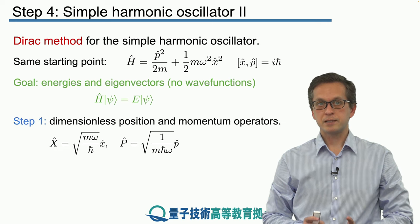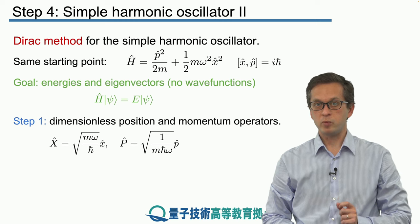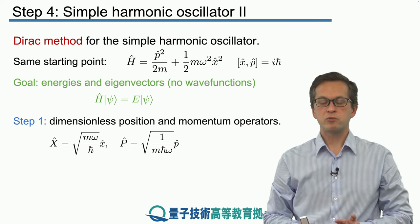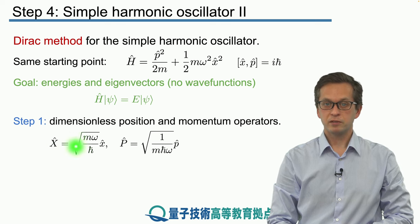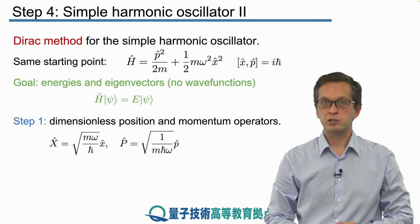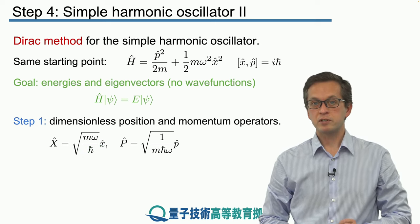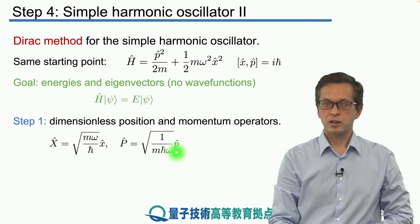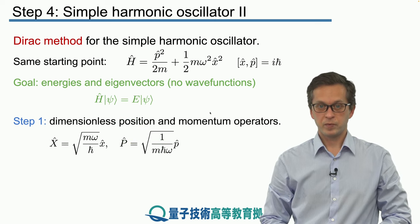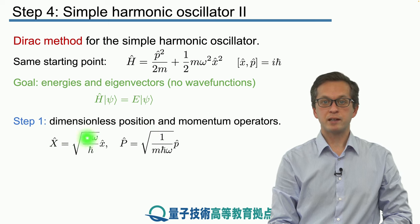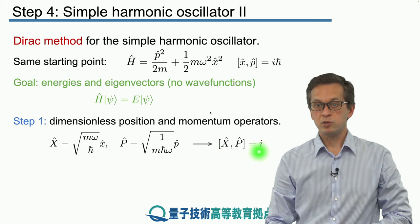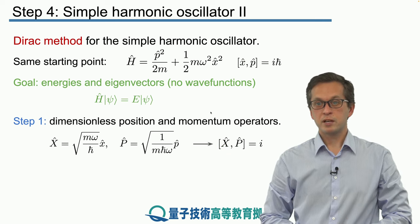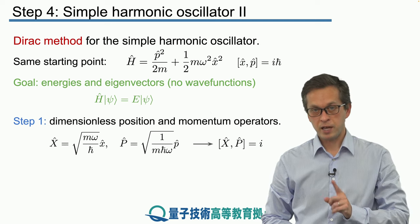So how do we go about solving that? Step number one is to introduce dimensionless position and momentum operators. This is just rescaling our x hat and p hat by some numbers. In particular, capital X and capital P are given by these expressions. The square root of m times omega divided by h bar has the dimensions of inverse meters, while the other scalar has the dimensions of inverse momentum. The new rescaled dimensionless position and momentum operators satisfy a commutator equal to i — the h bar factors out.